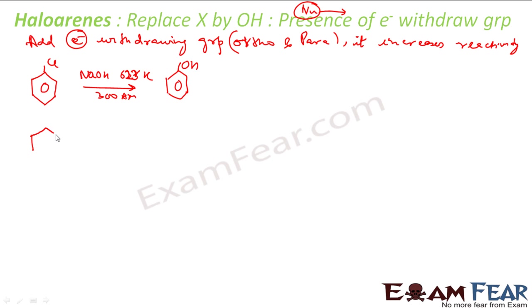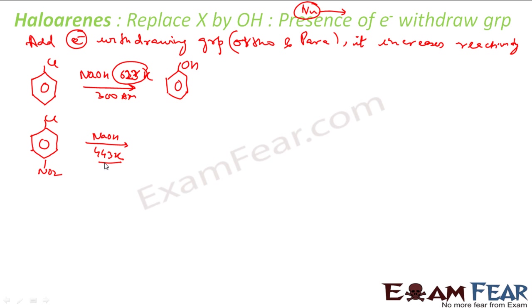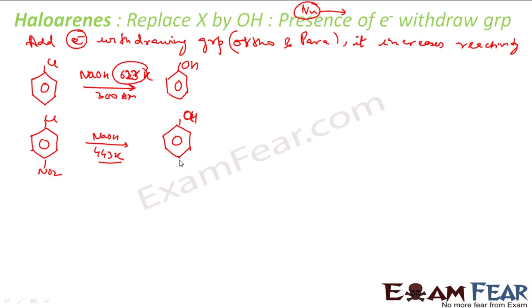Now, if I add a nitro group at the para position, the same reaction — you again need NaOH — but now you need only 443 Kelvin. And you will get the same substitution reaction: the Cl will be replaced with OH, and the nitro group remains.